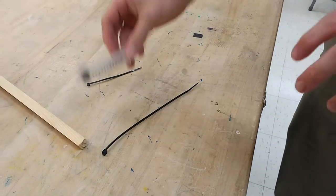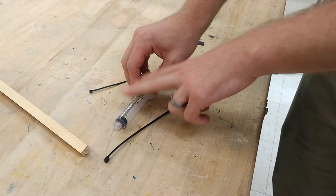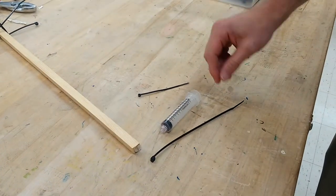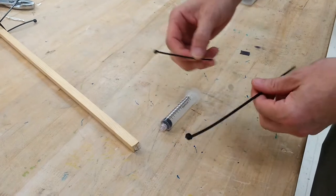At some point you're going to have to figure out how to attach the syringe to your robotic arm without using hot glue, and that's why we have the zip ties.